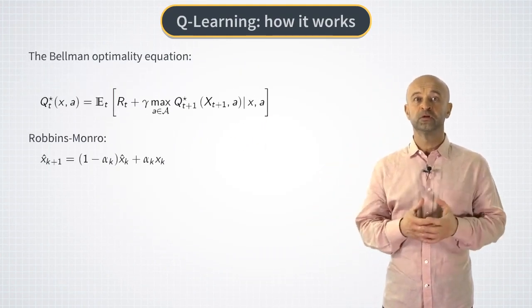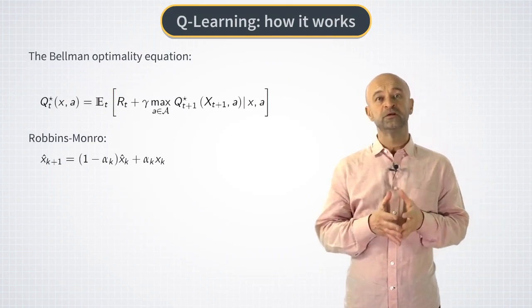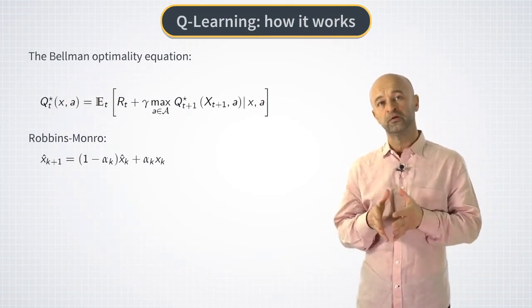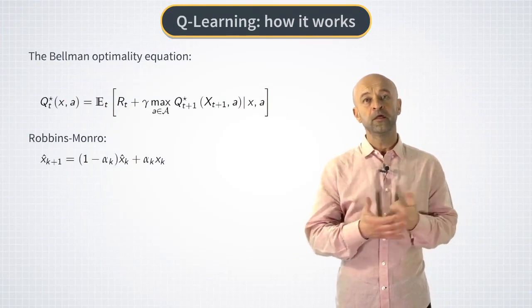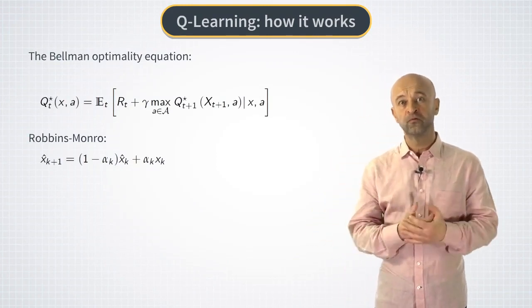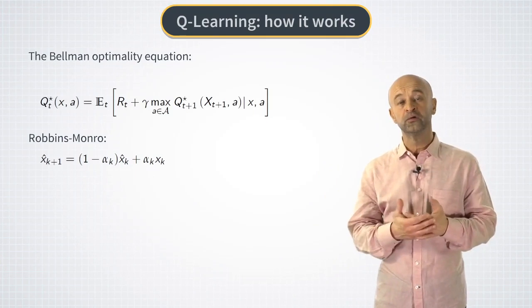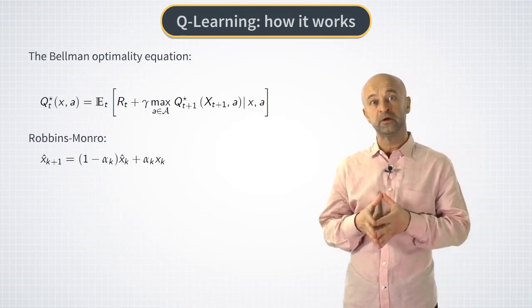Let's compare the Bellman optimality equation with the Robbins-Monroe update. In the Bellman equation, the optimal Q function is given by the expectation of the right-hand side. On the other hand, the Robbins-Monroe formula just shows how to update a running estimation of the mean.